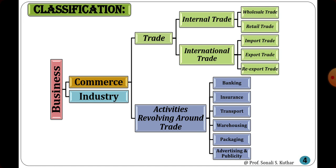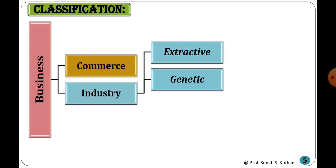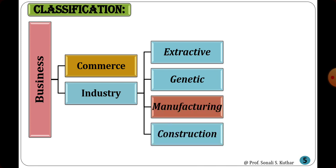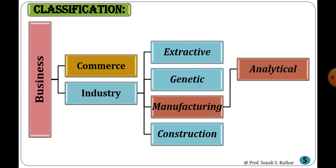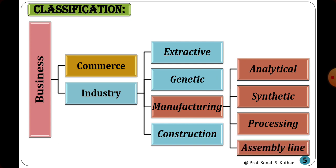Commerce is related only to the distribution of products from industry up to the consumer; it does not involve any manufacturing unit. It only transports goods from the manufacturer to the consumer. Industry is classified as extractive industry, genetic industry, manufacturing industry, and construction industry. Manufacturing industry is further classified as analytical, synthetic, processing, and assembly line industry. The industry and its classification will be covered in the next lecture.